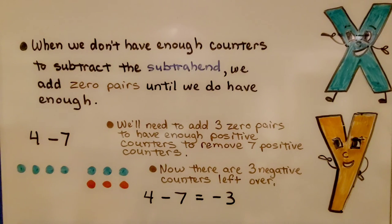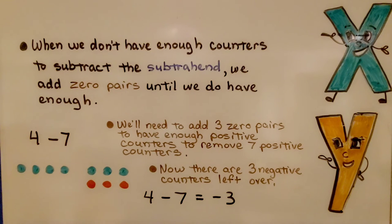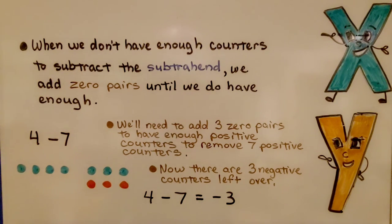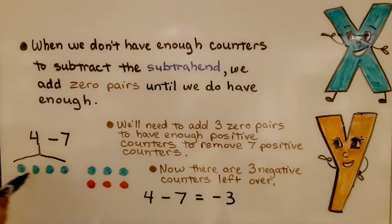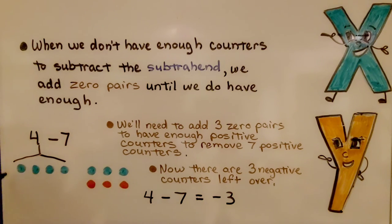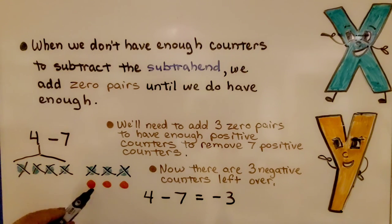When we don't have enough counters to subtract the subtrahend, we add zero pairs until we do have enough. We have positive four minus positive seven. We make four positive counters and will need to add three zero pairs to have enough positive counters to remove seven. Here are our four positive ones; we add one, two, three zero pairs so there is a total of seven positive counters that we can take away. We take away the seven positives and what remains are three negatives. Four minus seven is equal to negative three.